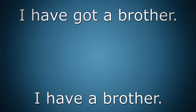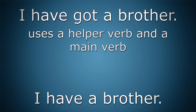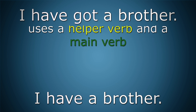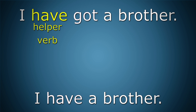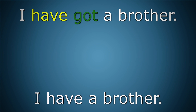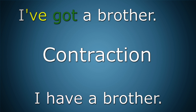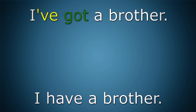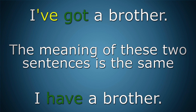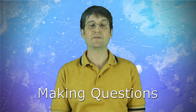In the first sentence, the have got form uses both a helper verb and a main verb. Have is the helper verb and got is the main verb. Normally we would blend I and have together and make a contraction, so it would be I've got a brother. In the second sentence, the have form uses only a main verb, have. The meaning of these two sentences is the same.